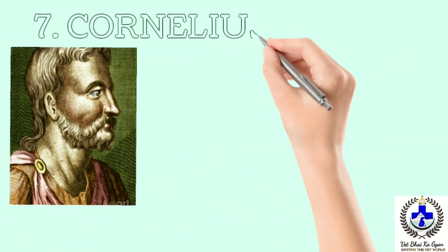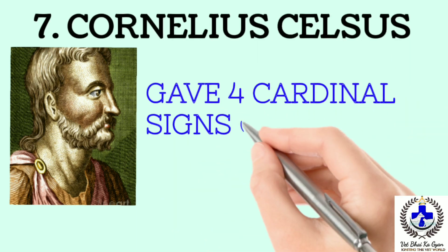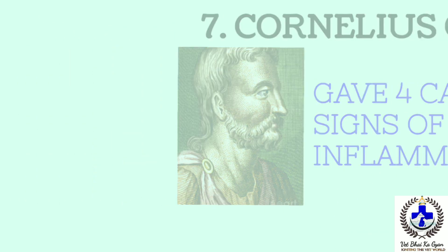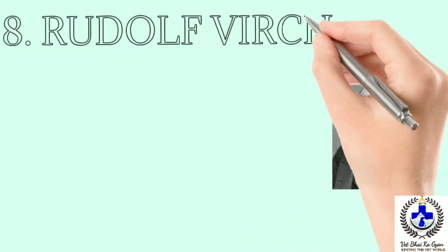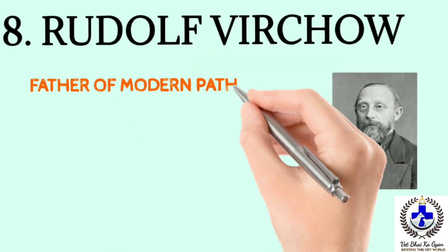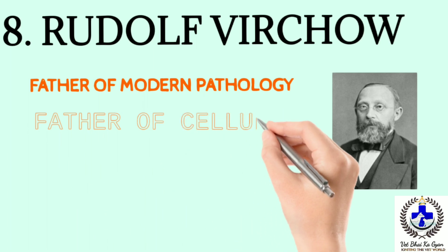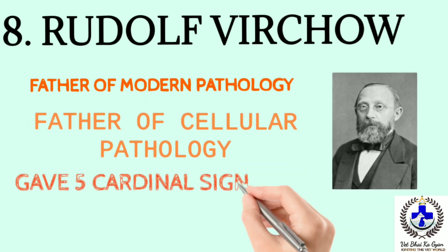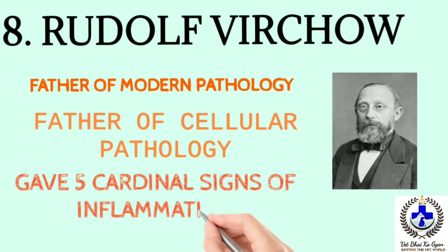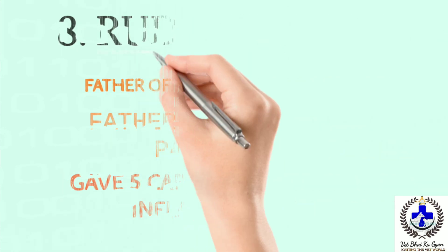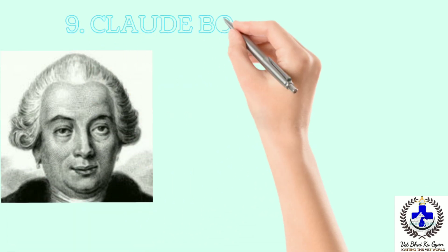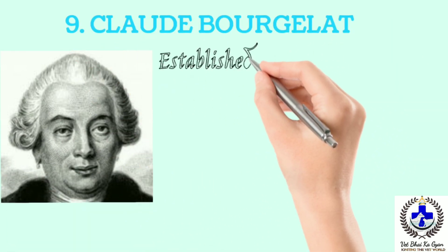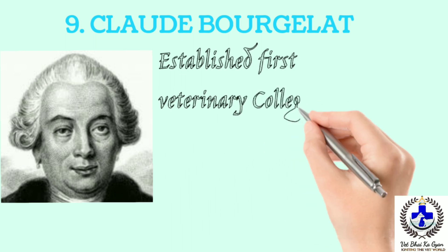Now let's know about scientist Cornelius Celsus — he gave the four cardinal signs of inflammation. Next we go to Rudolf Virchow — he is the father of modern pathology and father of cellular pathology, and gave the five cardinal signs of inflammation. He is very important to remember.